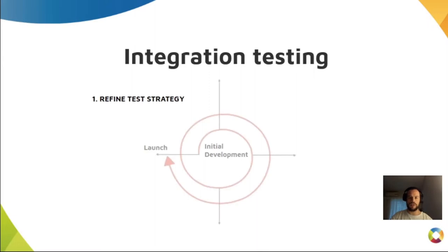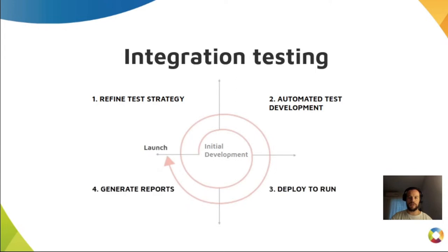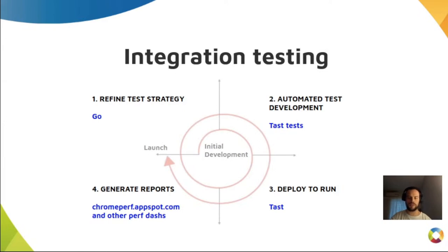That's why automation within integration testing comes in handy. Integration testing is critical. The process we use for that goes like this: refine the test strategy to set the benchmarks, build the automated tests, deploy them to run, and generate the reports. On Chrome OS, you can use Tast — the integration testing system for Chrome OS. Tast not only does performance testing, but is also a great end-to-end testing framework, supporting building, deploying, and running tests.